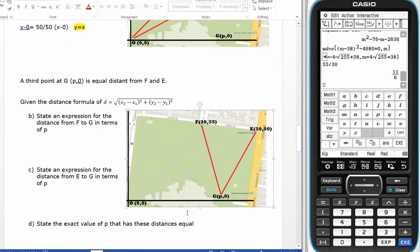In part B, there is a second point G which has an x-intercept of P. We've got the distance formula, state an expression for the distance from F to G in terms of P.